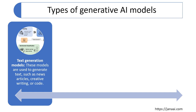Now we will discuss the different types of generative models. The first one is text generation. These models are used to generate text such as news articles, creative writing, summaries, poems, and new code. These text generation models are all based on large language models.